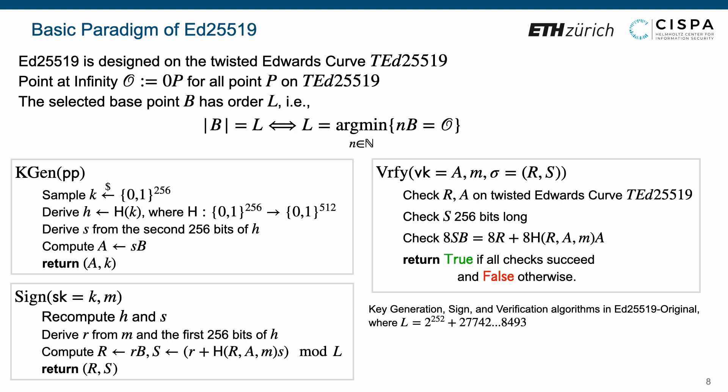The signing algorithm inputs a secret key and a message M. The signer first recomputes the value H and S as in the key generation algorithm. Then, it derives a value r from the message M and the first 256 bits of H.